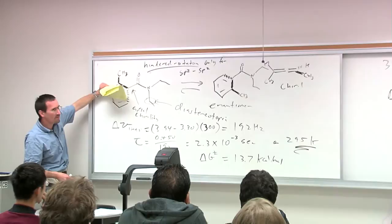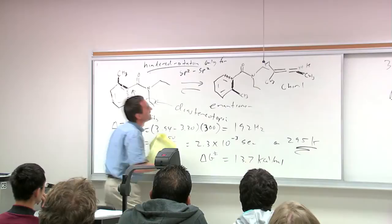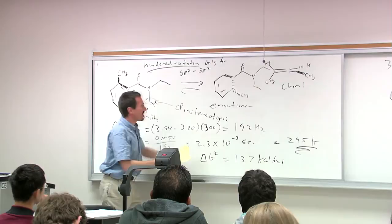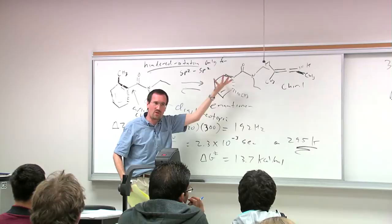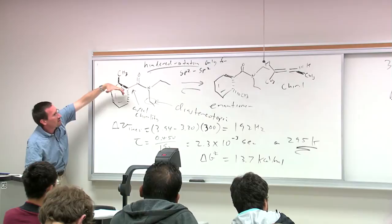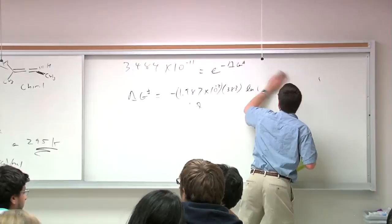You still have axial chirality as long as you have a barrier. A student pointed out a drawing correction — the methyl group should be going back in one configuration and forward in the other. Two enantiomers: methyl out, flip, methyl back.